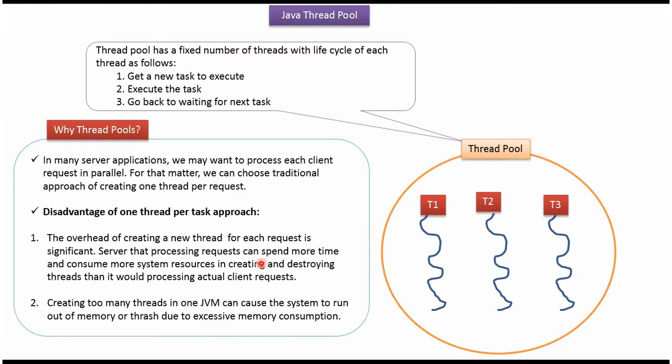Suppose say there are 100,000 requests are coming to your application. To process 100,000 requests, if we create 100,000 threads, then it will consume lot of system resources and memory. And if more more requests comes, then at one point of time, system will crash. So we should not use per request one thread.